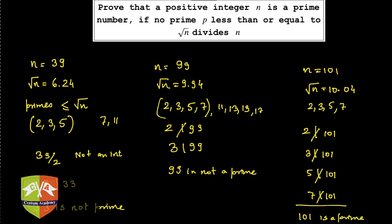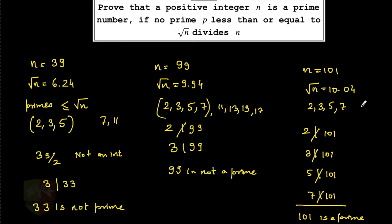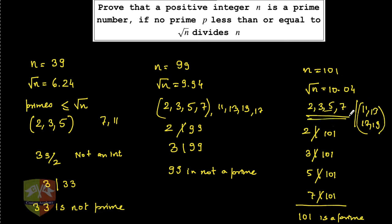Let us try and prove this. When n was 101, we took root n as 10.04 and checked divisibility of 101 by prime factors less than 10.04, that is 2, 3, 5, and 7. We never needed to divide by 11, 13, 17, 19, and so on. If none of those smaller primes divide n, then no other prime factors will divide n either.